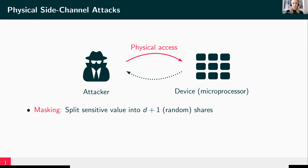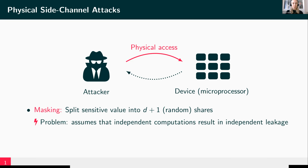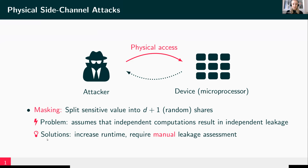Masking is one countermeasure we can apply against these attacks, where we split a sensitive value — for example, in our masked software — into multiple random shares. The problem, however, is that it relies on an assumption that independent computations reside in independent leakage, and this is unfortunately not always fulfilled by microprocessors. There exist several solutions, but they all have in common that the software has increased runtime, and we still need manual leakage assessments to make sure the masked software is really secure on our microprocessor.